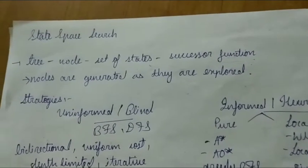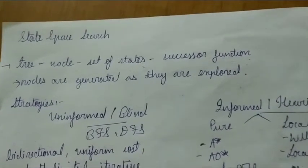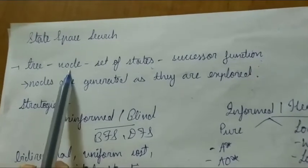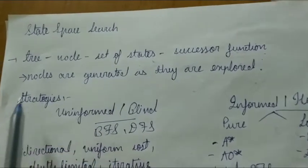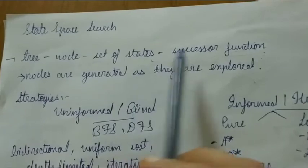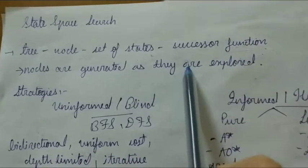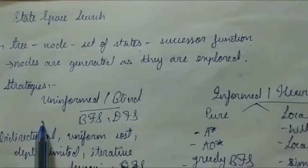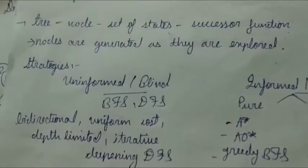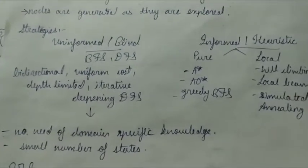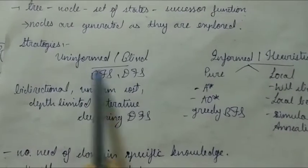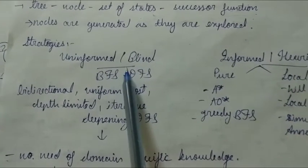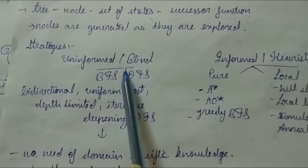Hello friends, today I am going to explore state space search. State space search is a simple tree structure in which each and every node corresponds to a specific state. It is a set of states where a successor function is applied to move from the current to the next state. Nodes are not initially generated but are generated as they are explored. Two strategies are present: uninformed or blind search, and informed or heuristic search. Blind search is sometimes also known as brute force.